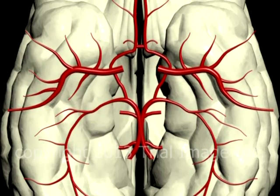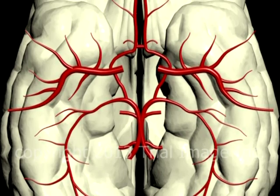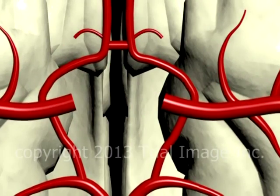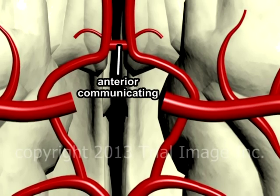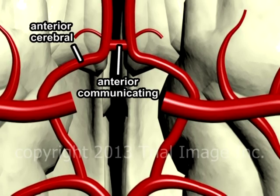Now that we have a better understanding of the anatomy of the Circle of Willis, let's take a look at how it contributes to subarachnoid hemorrhage in the brain. While beautiful in design and function, the Circle of Willis is also the location of 85% of all aneurysms within the brain. One common site for the occurrence of an aneurysm is the junction between the anterior communicating and anterior cerebral arteries.